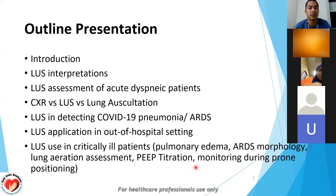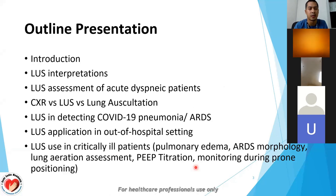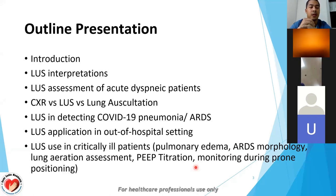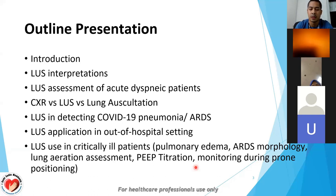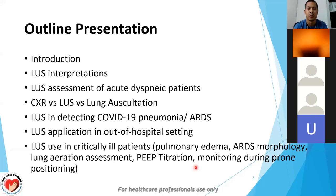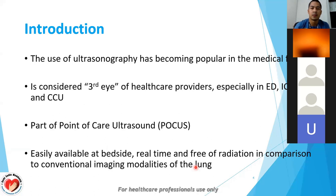The outline covers lung ultrasound assessment in acute dyspneic patients, the difference between chest X-ray, lung ultrasound, and lung auscultation, lung ultrasound in detecting COVID-19 pneumonia or ARDS, its application in other hospital settings, and use in critical patients — including pulmonary edema, ARDS morphologies, lung aeration assessment, PEEP titration, and monitoring during prone positioning.